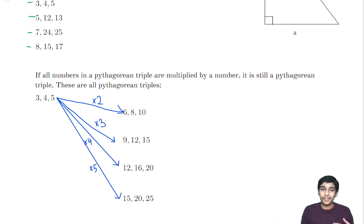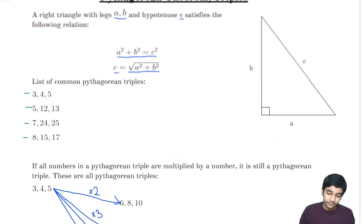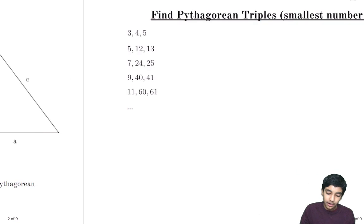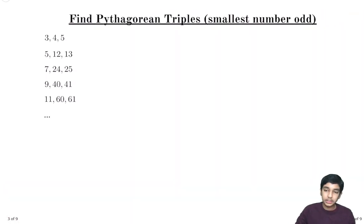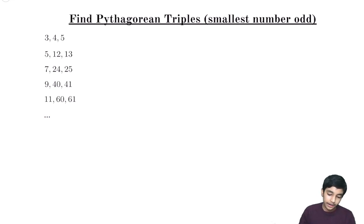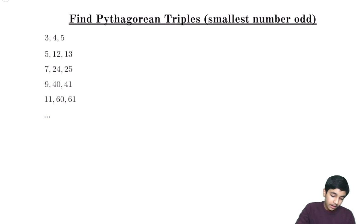This helps us see that there are actually an infinite number of Pythagorean triples. Now let's look for ways to calculate Pythagorean triples if the smallest number is odd. If the smallest number is odd, then we know it's going to be a Pythagorean triple.